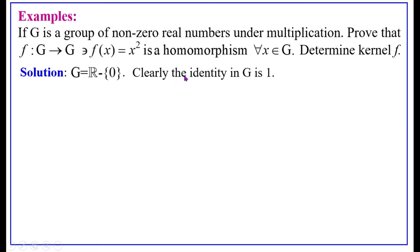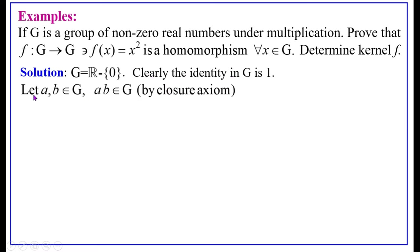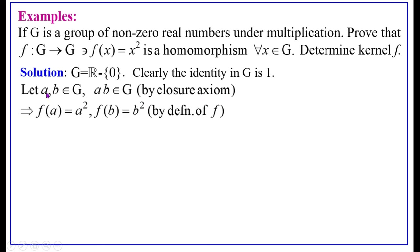Here G is the set of non-zero real numbers, that is R minus {0}, the set of real numbers except zero, with multiplication as the operation. Therefore, clearly the identity in G is 1. Let A, B belong to G; then A·B belongs to G by the closure axiom. Since A belongs to G, by definition of F, F(A) equals A squared. Similarly, since B belongs to G, F(B) equals B squared.